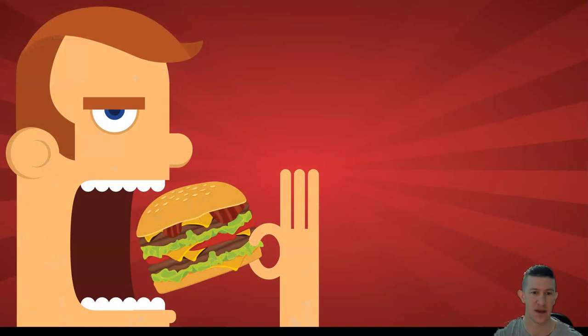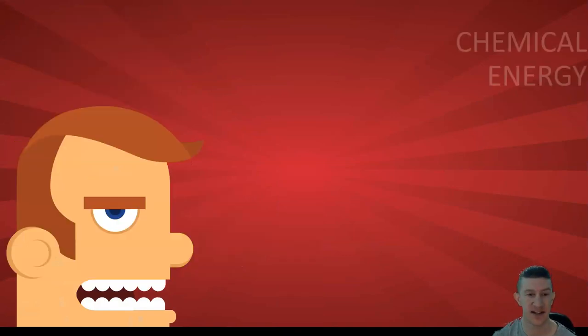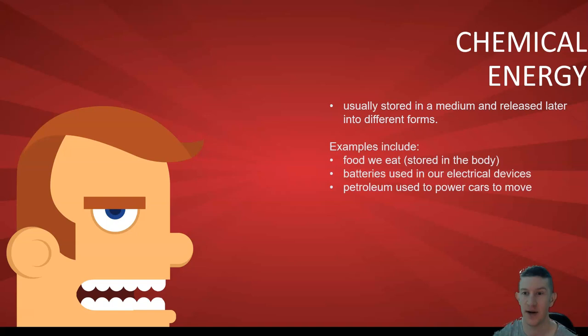What are the types of energy? Chemical energy is usually stored in a medium and released later into different forms. It's in the bonds of the chemicals. Examples include the food we eat, which is stored in our body until broken down, batteries, and petrol or fossil fuels we use in cars.